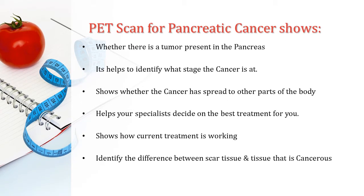A PET scan for pancreatic cancer shows whether there is a tumor present in the pancreas. It helps to identify the stage of cancer, shows whether the cancer has spread to other parts of the body, helps your specialist decide the best treatment for you, shows how current treatment is working, and identifies the difference between scar tissue and cancerous tissues.